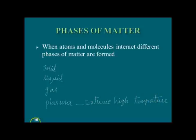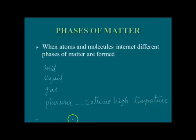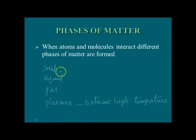The plasma state is obtained only at extreme high temperature, and this plasma state is a source of tremendous energy for future use of mankind. So now I have told you the three phases of matter and even the fourth phase.